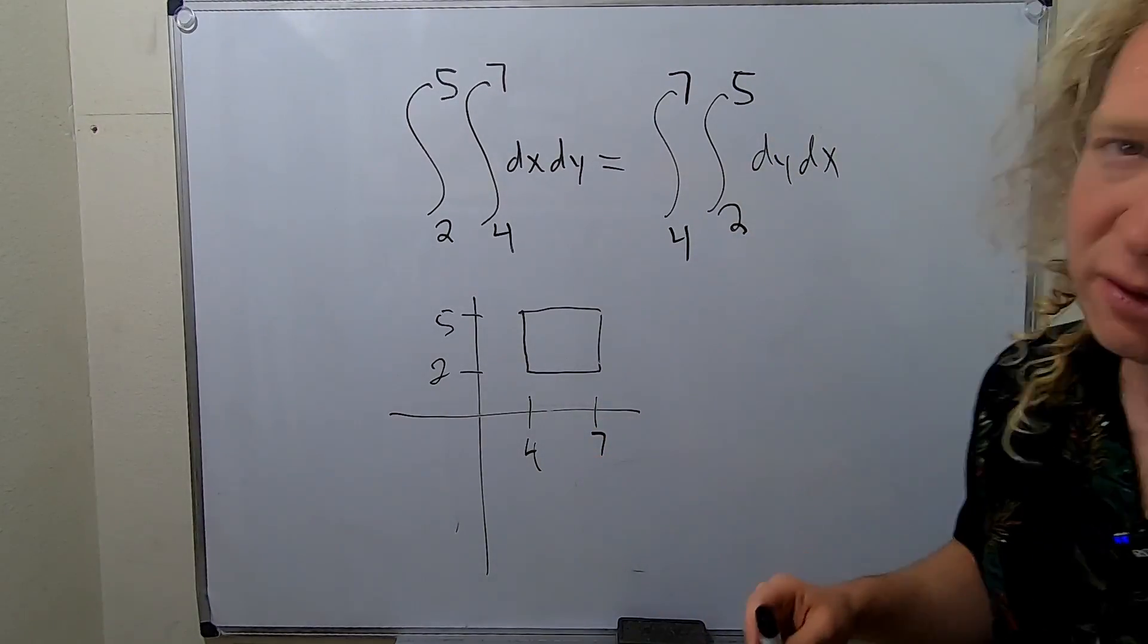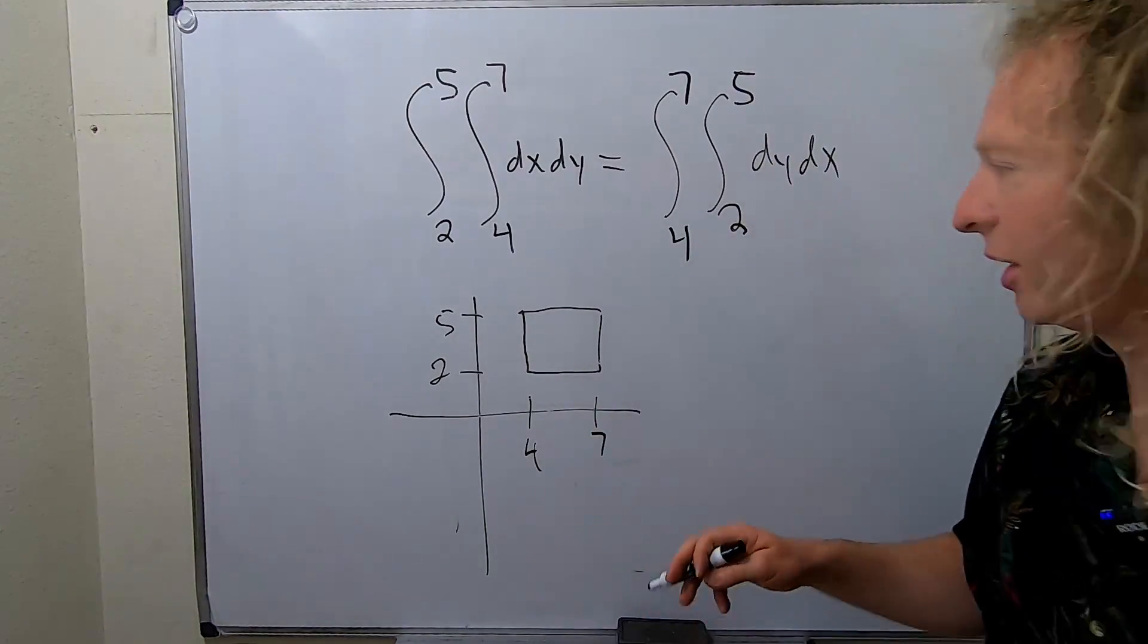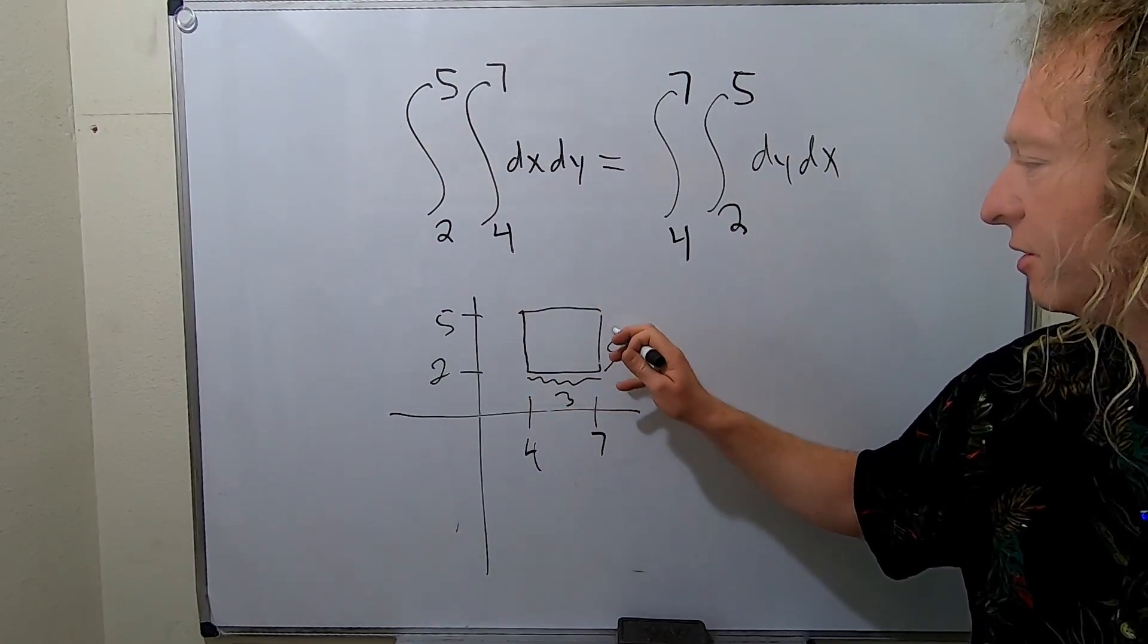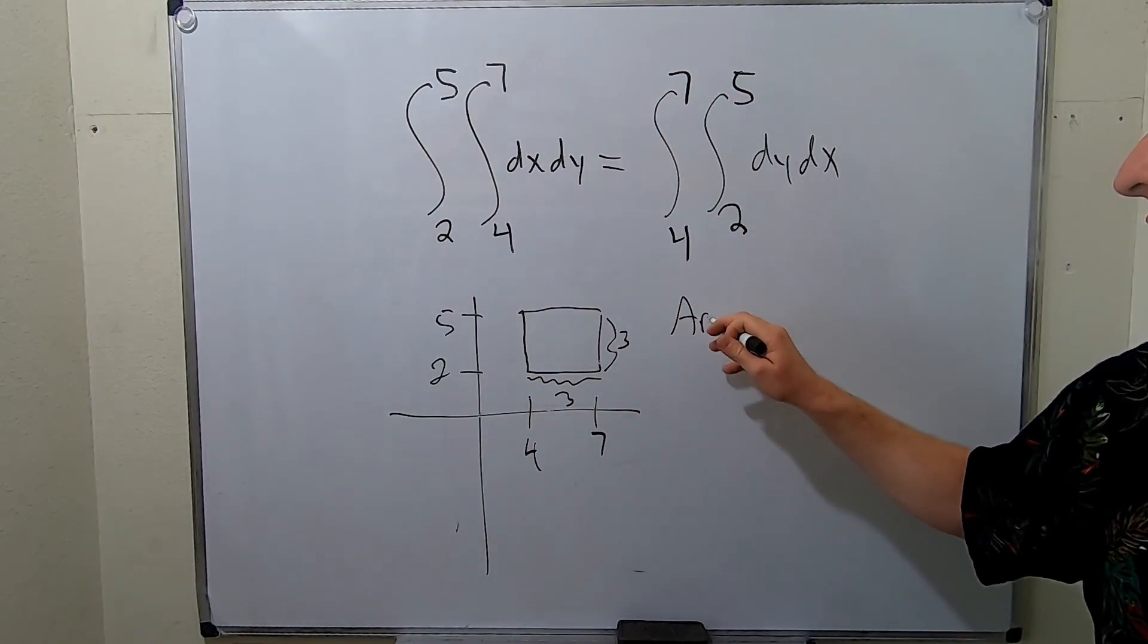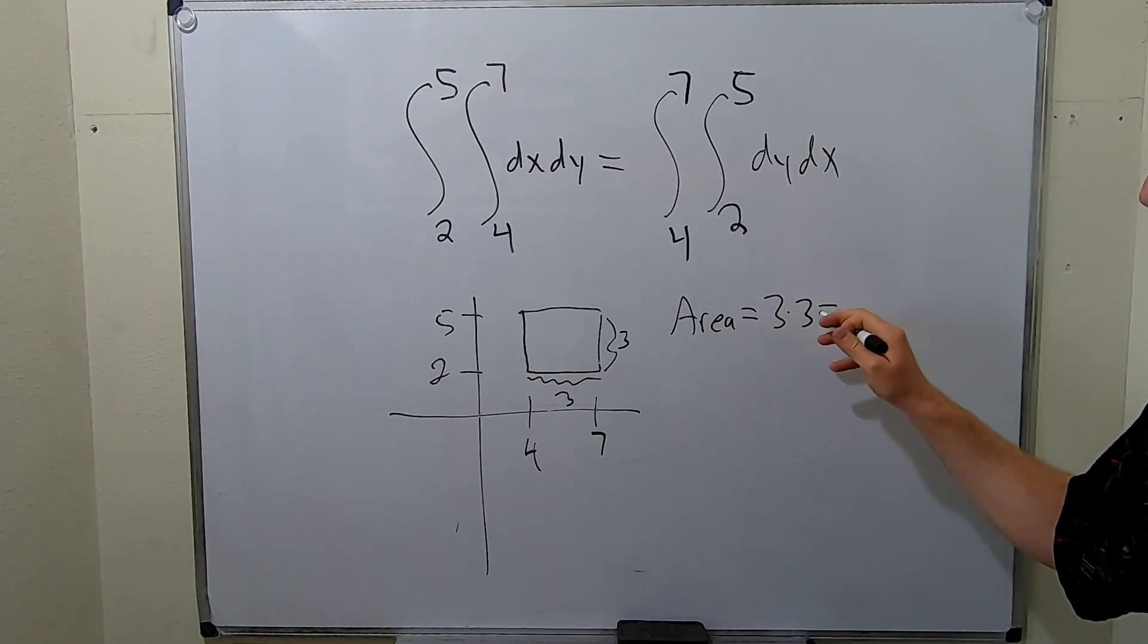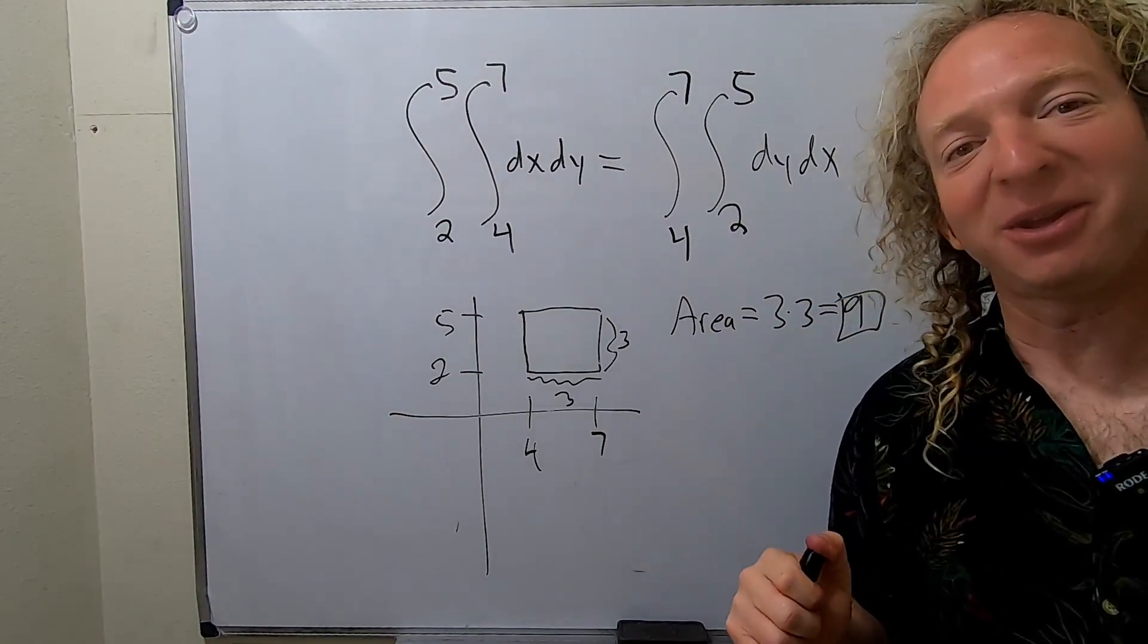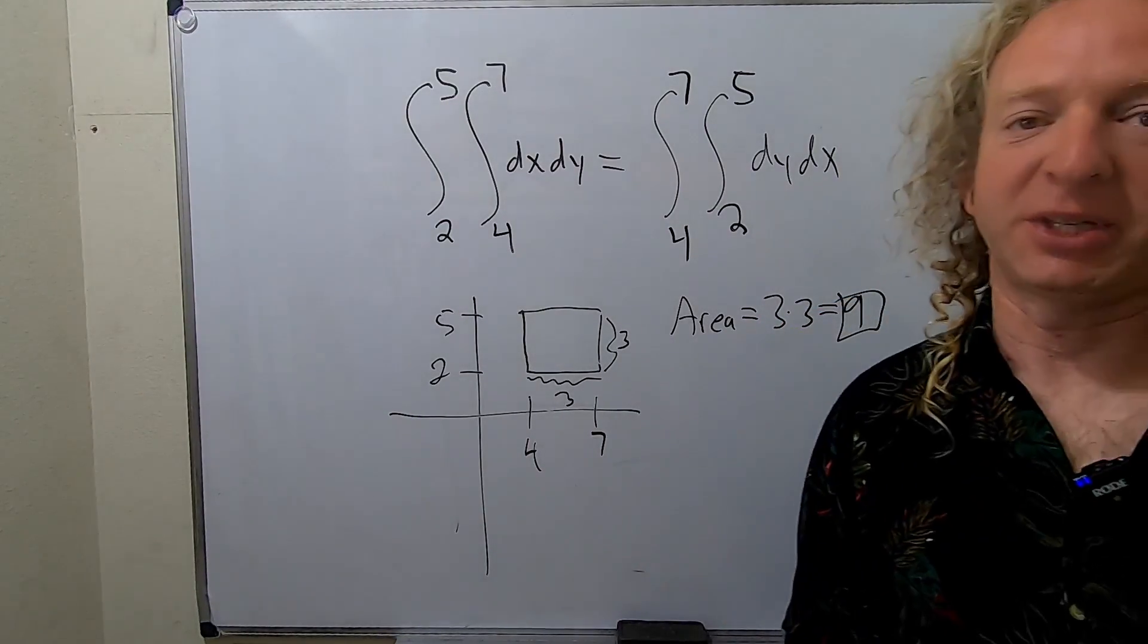We don't even need to use calculus to work this out because it's just a regular area. So this distance here is 3, this distance here is 3. So the area would be equal to 3 times 3 which is equal to 9. And that's how pros do it. I hope this video has been helpful. Take care.